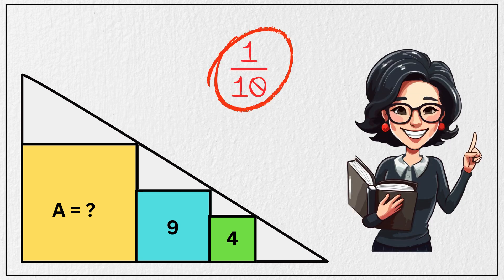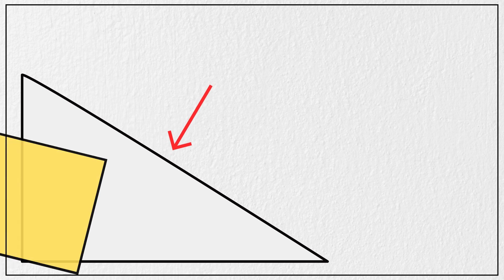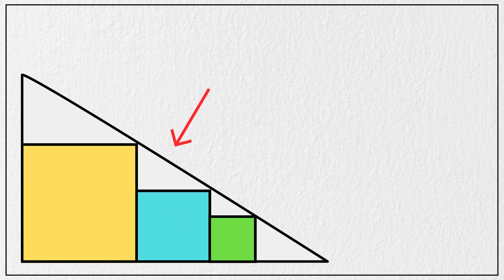Only 1 out of 10 SAT students got this triangle problem right. Can you solve this? We have a large right-angled triangle. Inside this triangle, 3 squares are perfectly nestled side by side, each one touching the triangle's base and the hypotenuse like this.